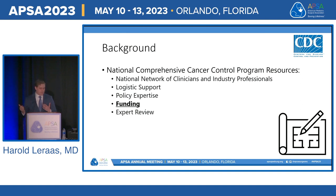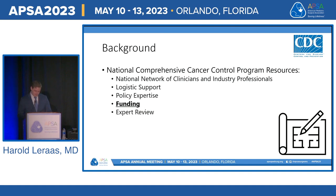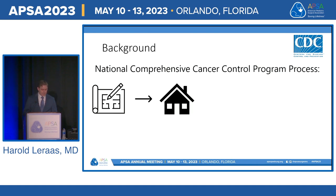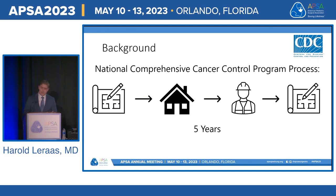Why are these plans important? After the creation of cancer control plans, the CDC provides resources including a network of clinicians and professionals, logistic support, policy expertise, funding, and expert review of cancer control strategies. Each group creates a cancer control program with local stakeholders, executes these plans, and at five-year intervals programs are assessed for success and revised to address flaws and new needs.